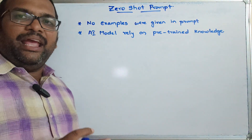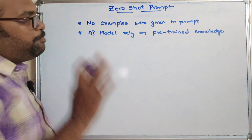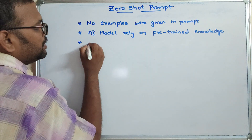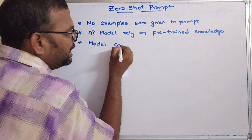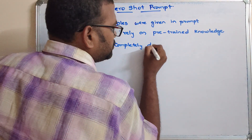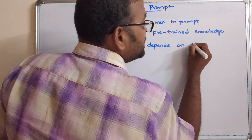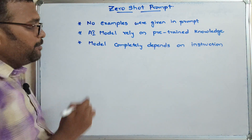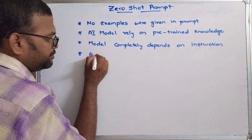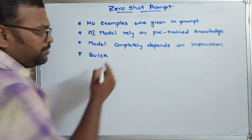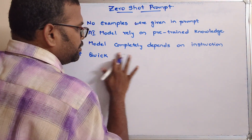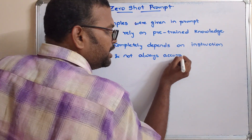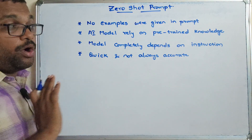Any AI model will be trained with a massive dataset, so purely from that pre-trained knowledge the output will be generated. The model completely depends upon one instruction — and here the instruction means the prompt. It is quick, but not always accurate. We will get an accurate result, but not always.